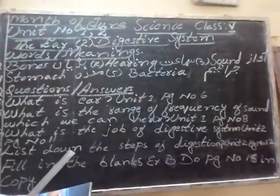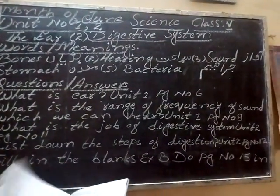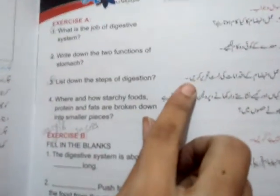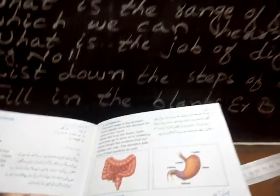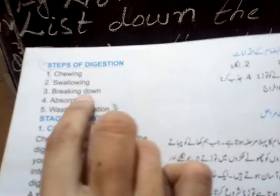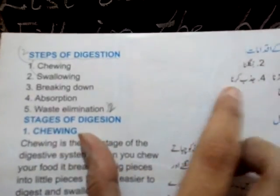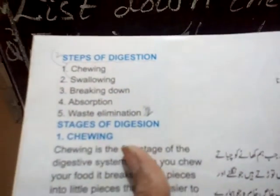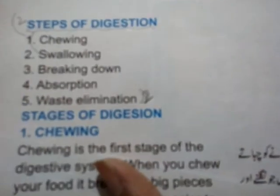Question number 4: List down the steps of digestion. Amle nizam ke akhdamaat ki list tahrir karein. Unit number 2, page number 12 par iska answer hai. Steps of digestion — amle nizam ke akhdamaat: Chewing — Chabaana; Swallowing — Nigalna; Breaking down — Khane ko todna; Absorption — Just karna; Waste elimination — Fizool ikhraaj.